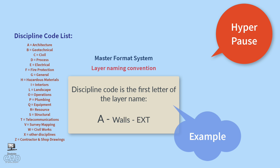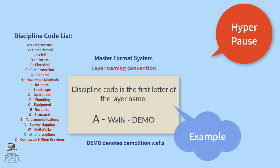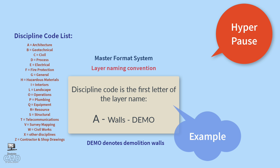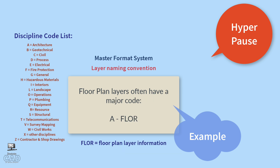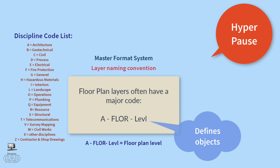Looking at another example, this code defines exterior walls. Changing the minor code to INT denotes interior wall partitions, and changing it to DEMO changes the meaning to a demolition wall layer. It is also acceptable to combine discipline codes for related occupational fields, such as architecture and interior design. The discipline code for an interior elevation could be 'AI-ELEV.' Keep in mind that in plan view, the major code for layers is sometimes designated by the acronym FLOR, followed by a minor code, where floor refers to floor plan view.